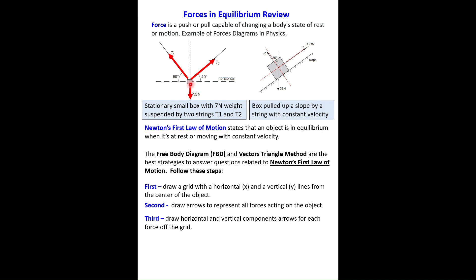The weight is aligned with the Y direction, but T1 and T2 are not. For this reason, we need to break those forces into components. Here is the horizontal component for T1 and the vertical component for T1. This is the horizontal component for T2 and the vertical component for T2. For the box on the incline, the weight is off the grid, so we find its horizontal and vertical components as well. Now all forces align with the grid.